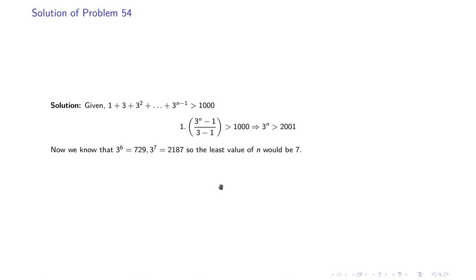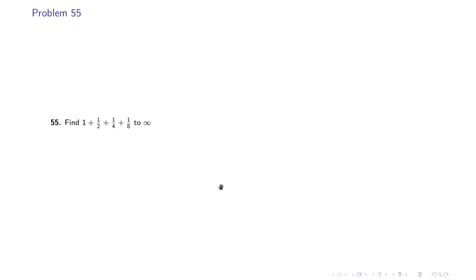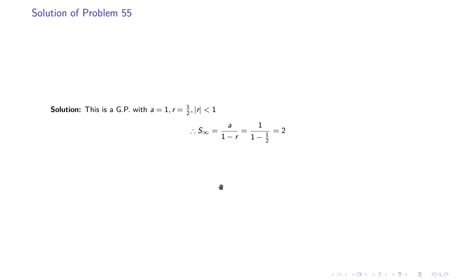Problem 55: Find 1 + 1/2 + 1/4 + 1/8 to infinity. We apply the sum formula for an infinite number of terms. Here |r| < 1 so it is a convergent series. S∞ = a / (1 − r) = 1 / (1 − 1/2) = 2.